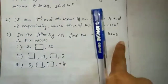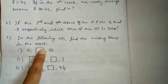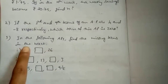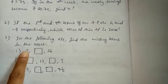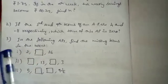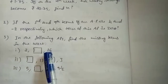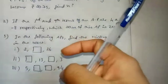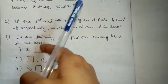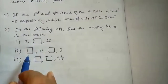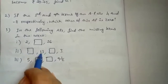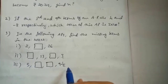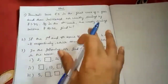Next: In the following AP, find the missing terms in the boxes. First term is given, second term is missing, third term is given — 2 and 26. Use A equals 2 and A3 equals 26, where A3 is A plus 2D, to find D, then find the second term. Here also, first and third terms are missing, second term is 13, fourth term is 3. Next: missing terms with 9 and a half. Do these homeworks in your homework book. Thank you.